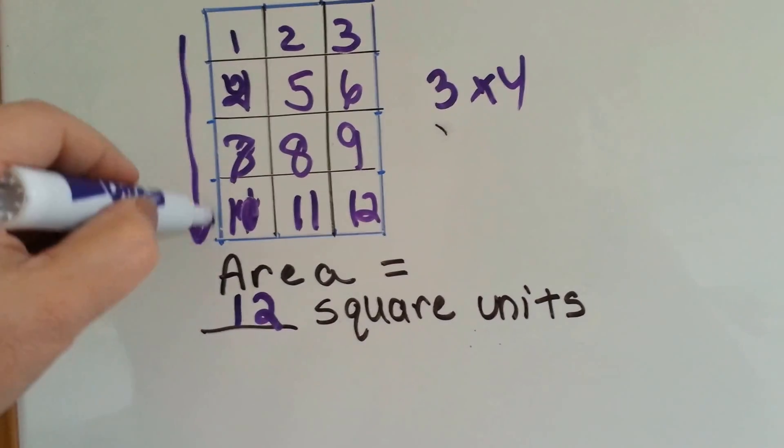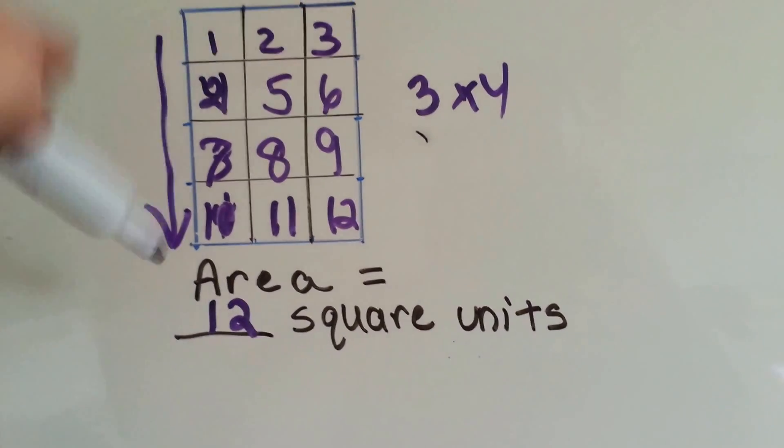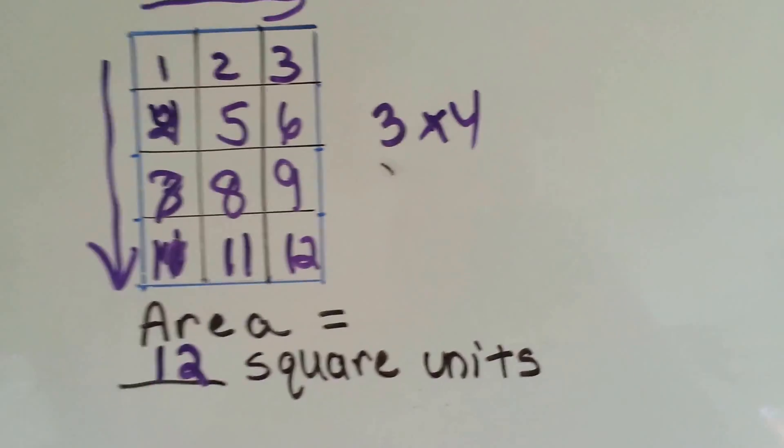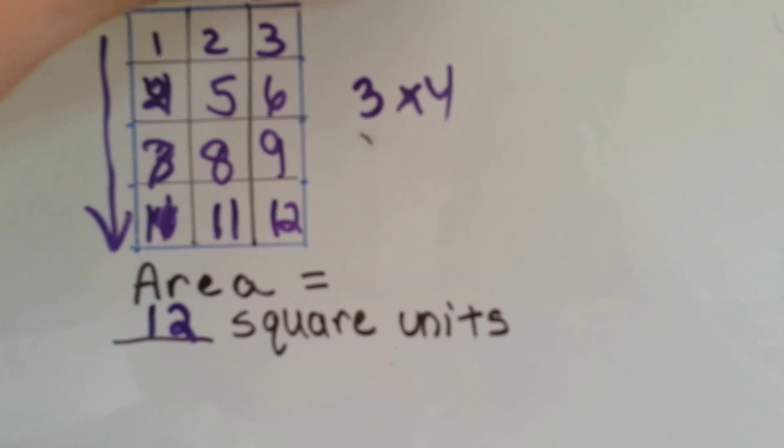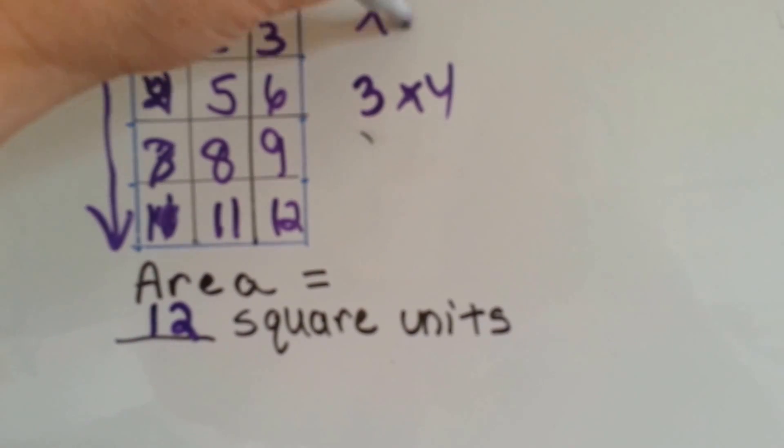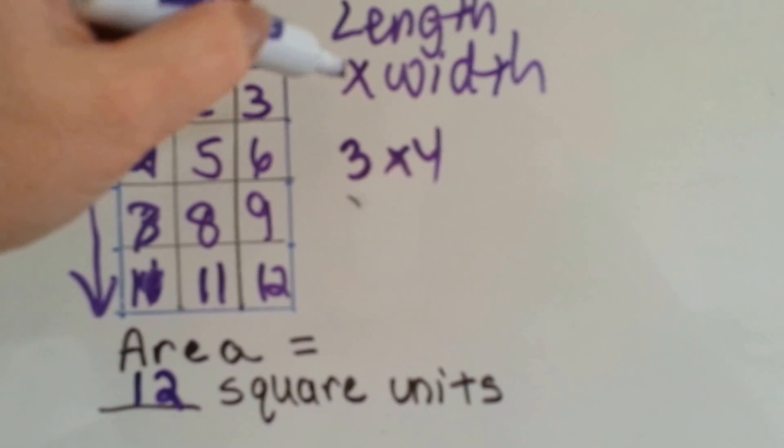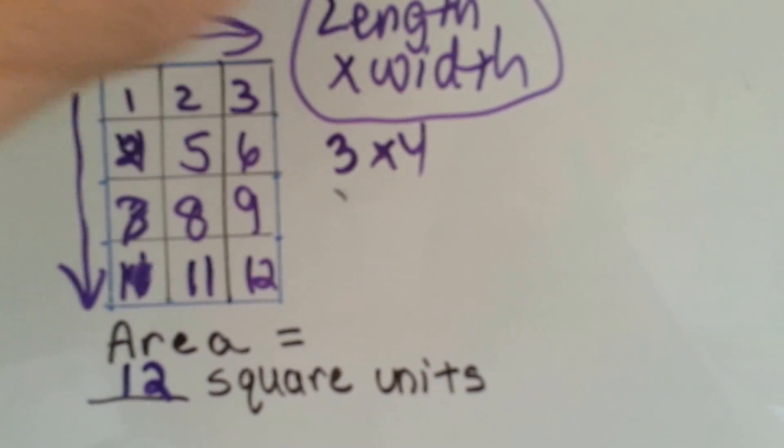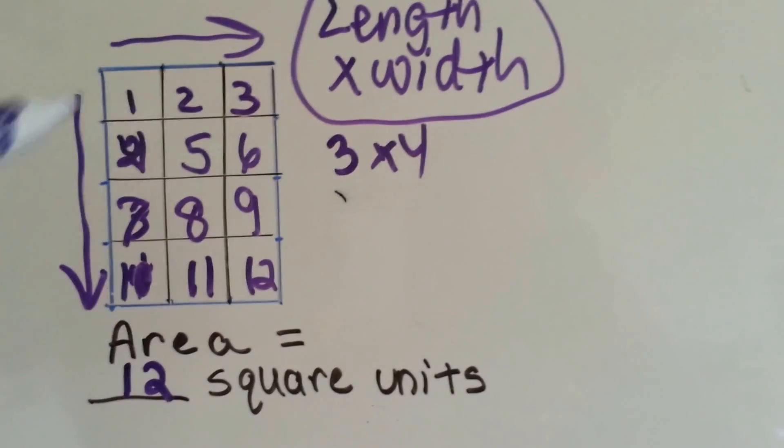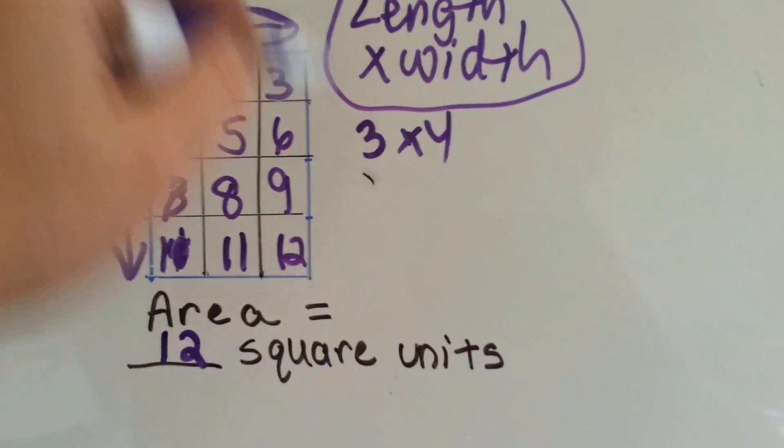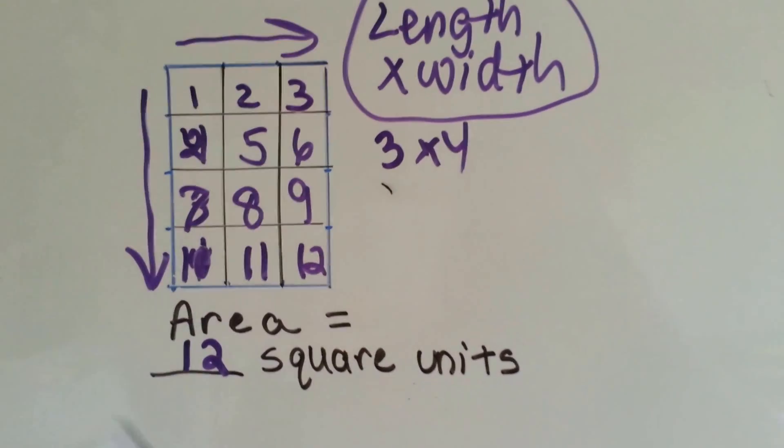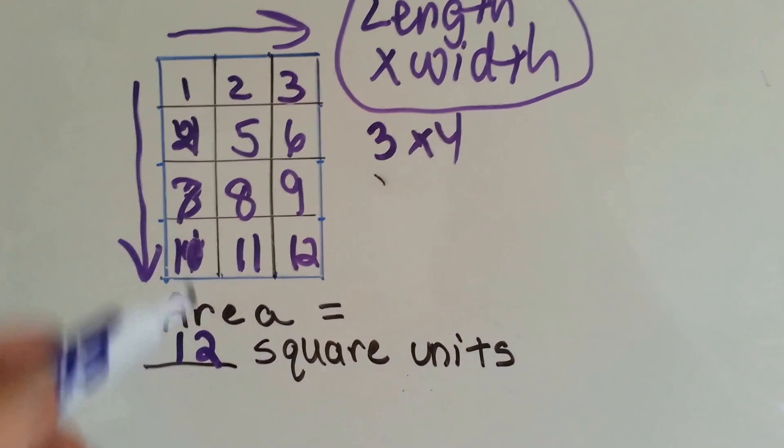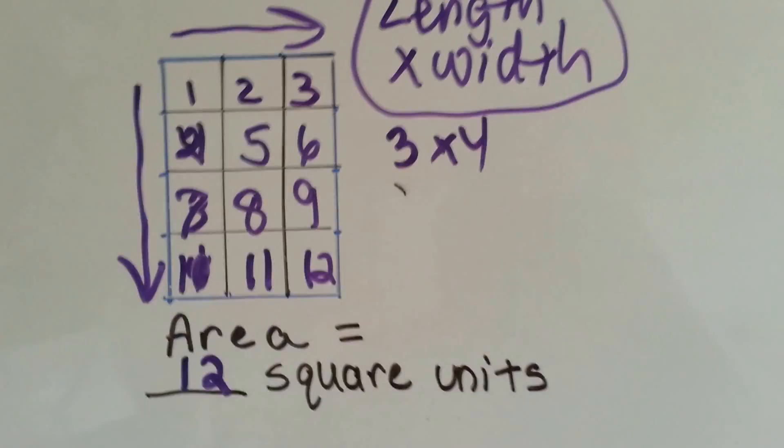So if there's 4 coming down this way and 3 going that way, we could just do 3 times 4. We could do the length times the width. And if we do the length times the width, and it's a full shape that doesn't have any indentations like a U shape or anything, if it's a full shape like this, we can do length times width.